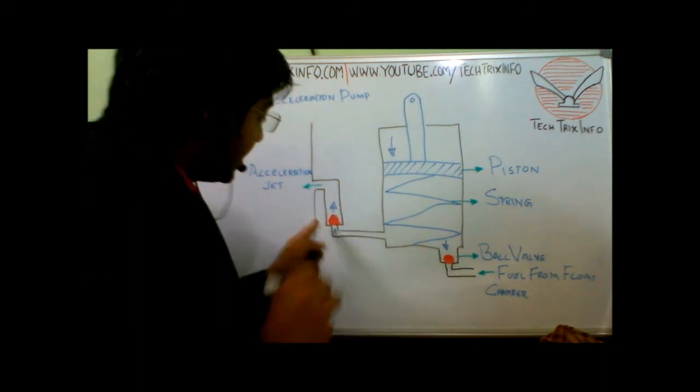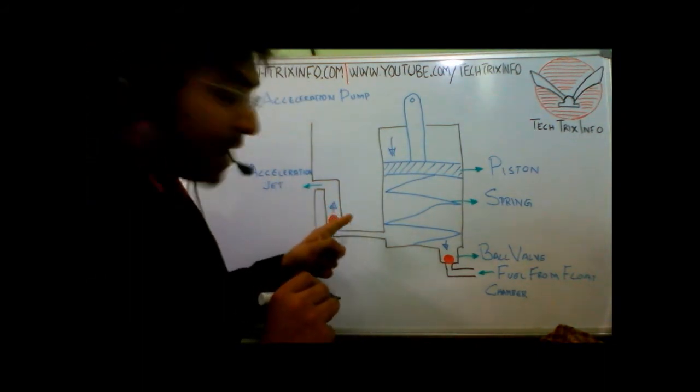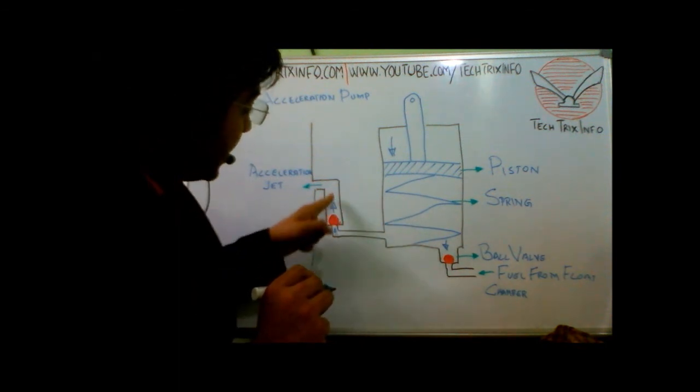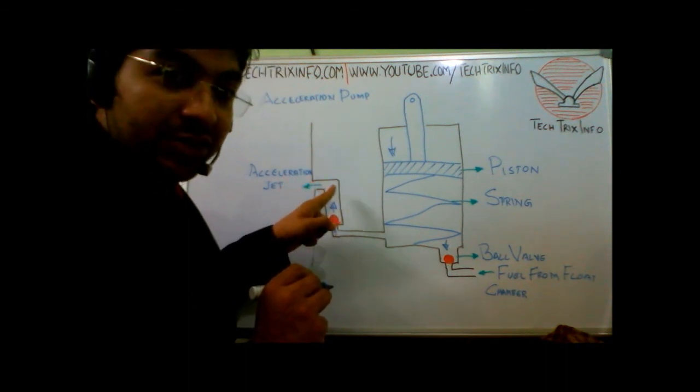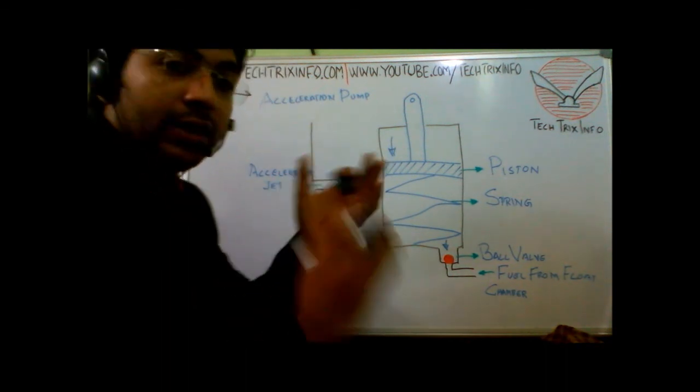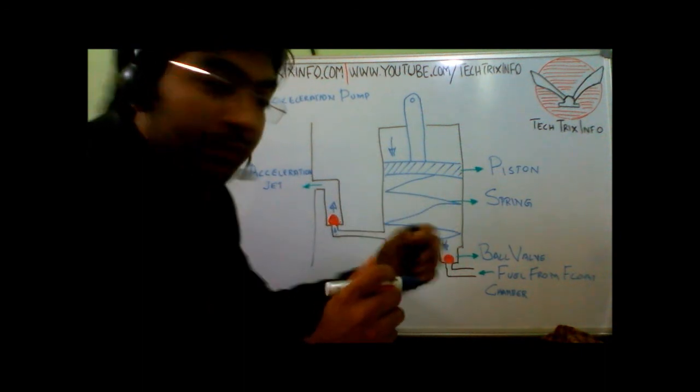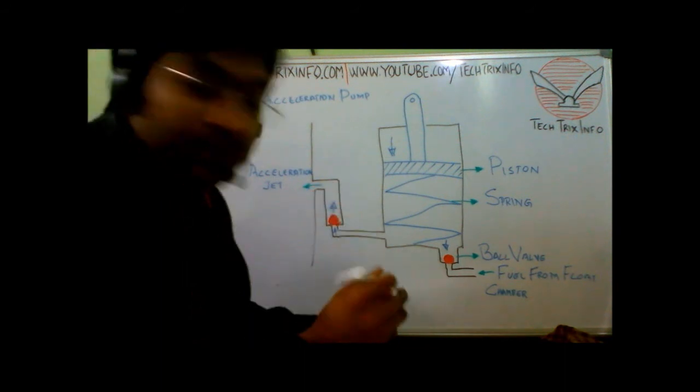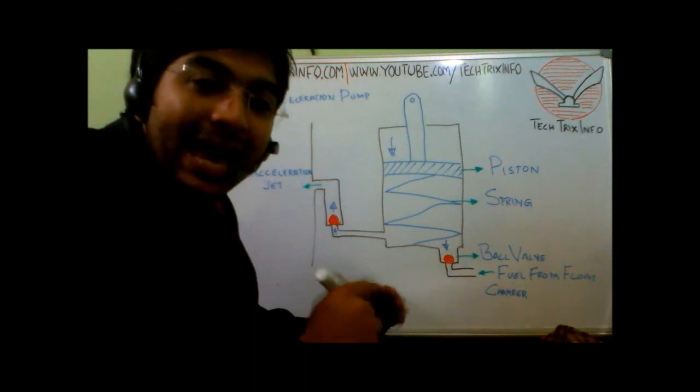This results in the valve at the acceleration jet area opening and the fuel which has been stored inside this pump will be supplied through this port. An acceleration jet will be supplied into the engine so that the required amount of power can be created. That much fuel will be supplied in addition for the demand to be satisfied by the accelerator pedal.